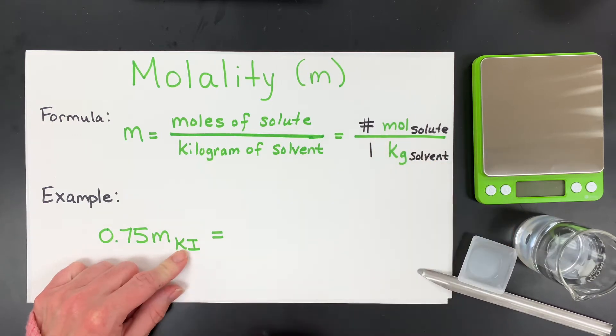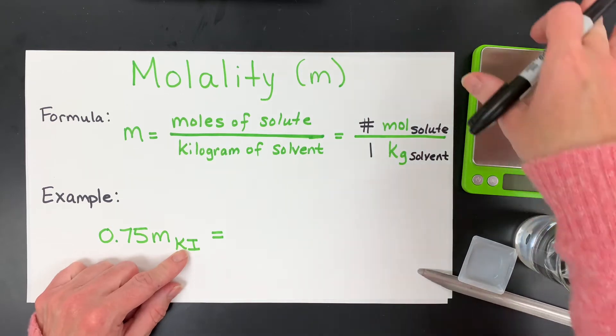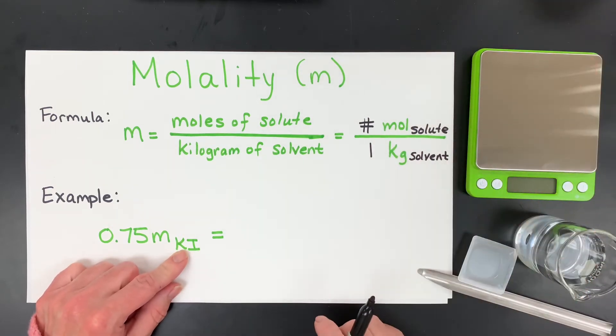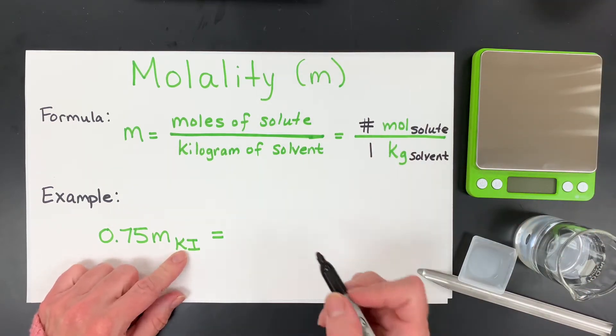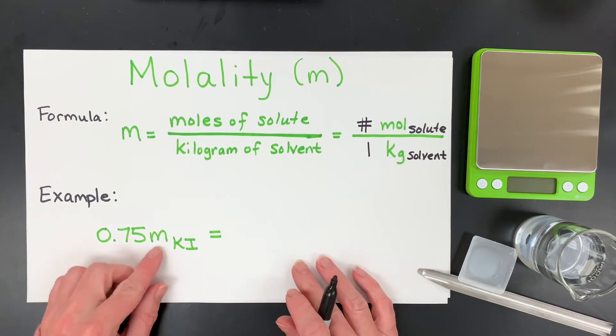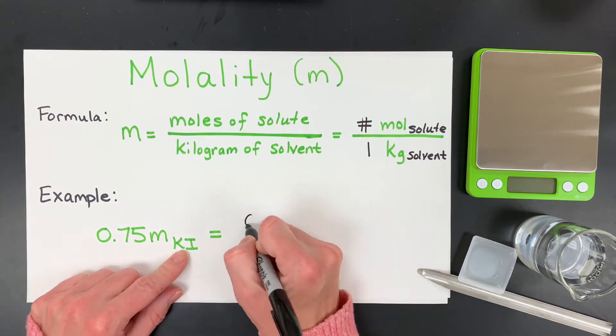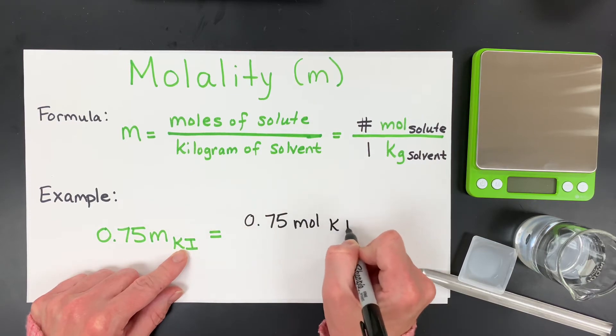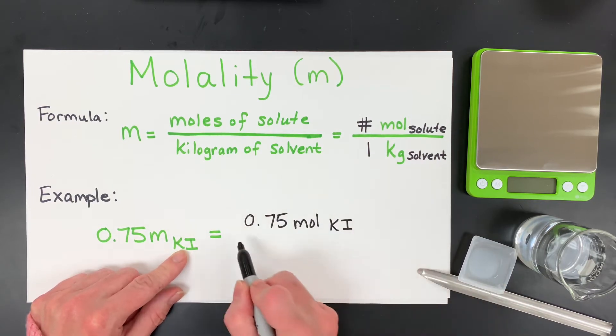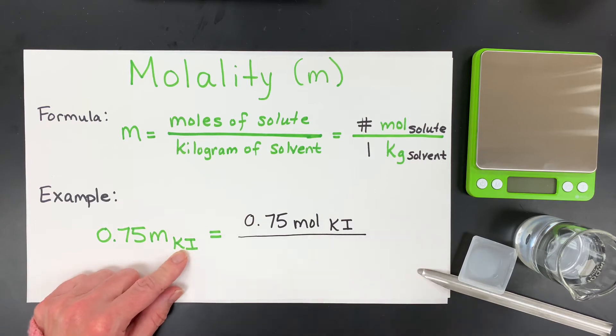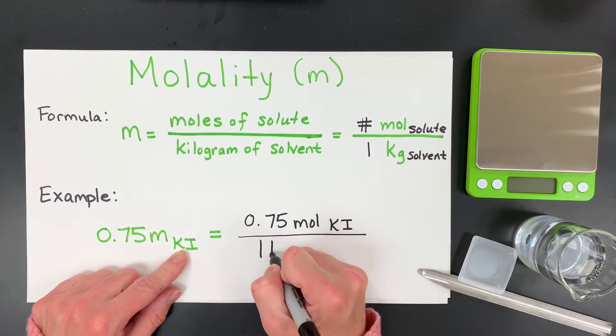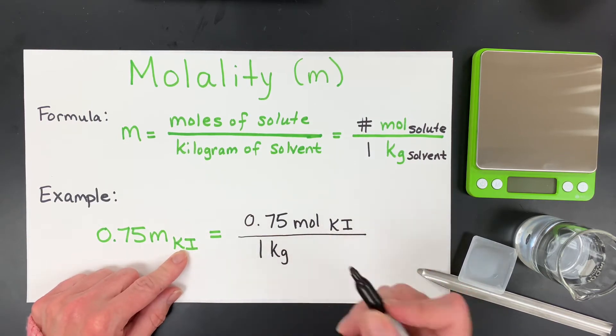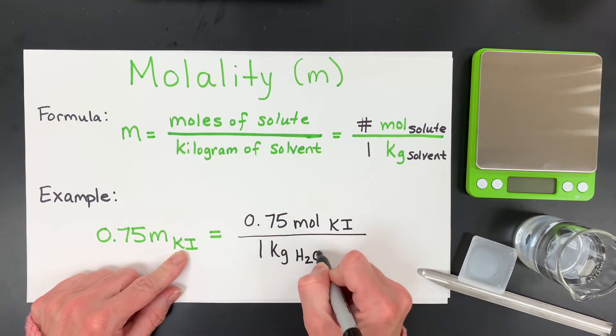It's typical that water is our solvent. In fact, in my lab demonstration, that will be our solvent. So if you see 0.75 molal potassium iodide, what that means is you have 0.75 moles of potassium iodide, which is the solute, it's a solid, that'll be dissolved into one kilogram of our solvent, in this case water.